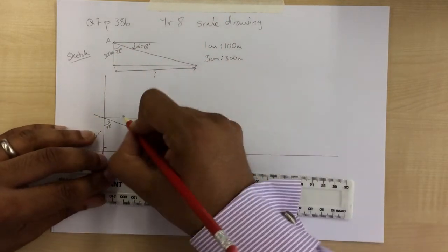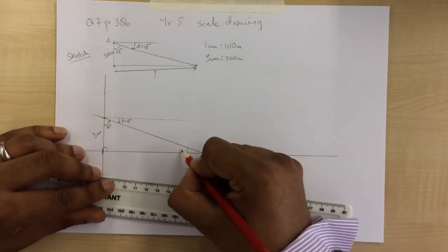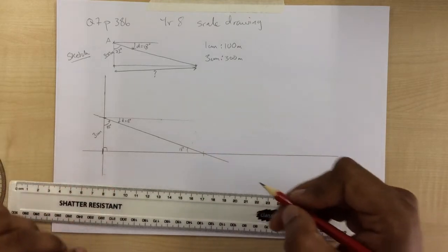And just check that angle of depression is in place. So that's what they asked for. That there, D equals 18 degrees. This here should also be 18 degrees. That's the elevation.